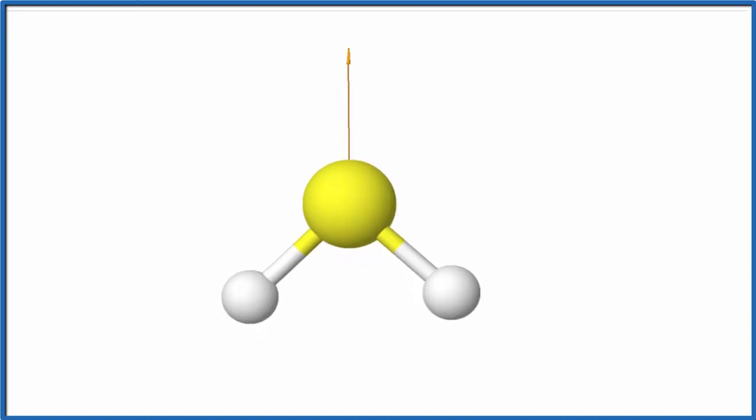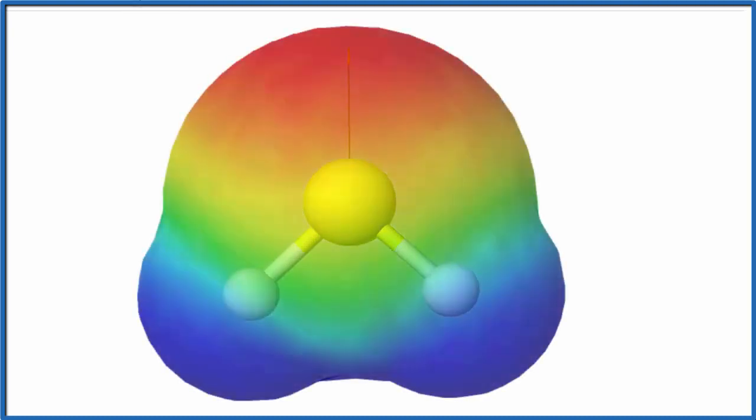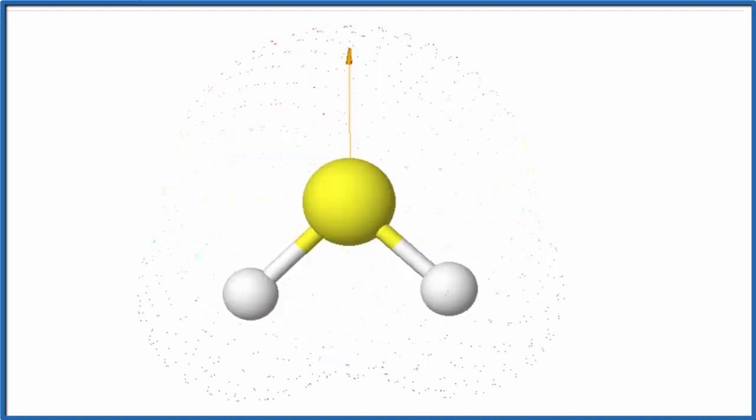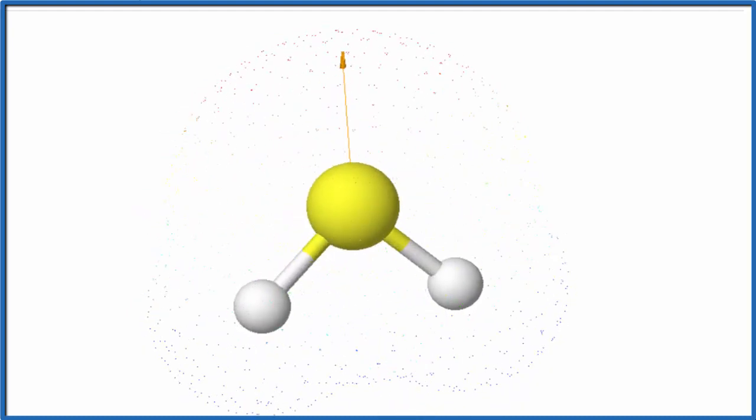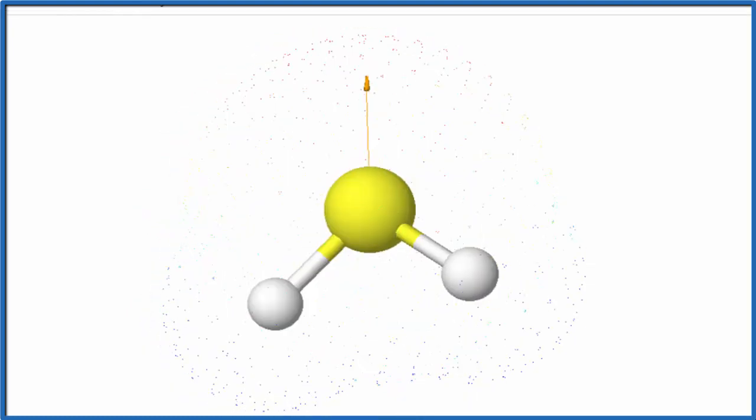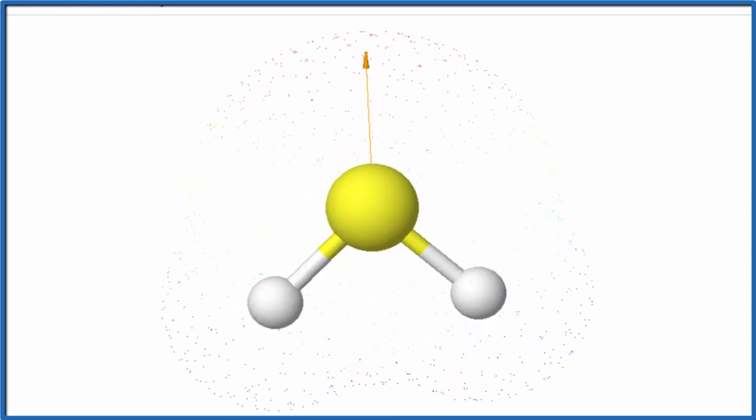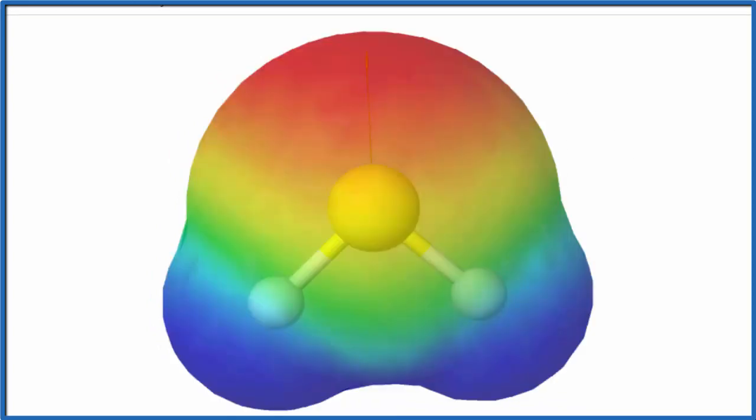If we look at the surface of the molecule, we can even visualize this. So the red up here, the red, that's more negative, and the hydrogen down here, that's more positive. So we have our poles, we have our dipole moment.